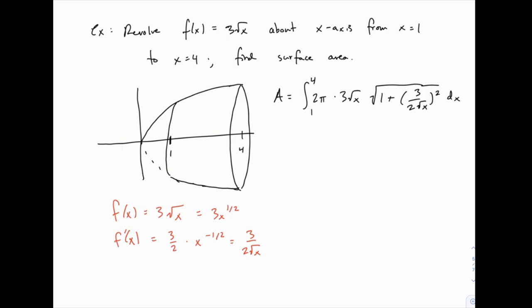So let's pull some pieces out of the integral. Let's take the 2π and the 3, and move them out in front. Then we have the square root of x times, then we can simplify here in parentheses, if we square 3 over 2 root x, we'll get 9 over 4x.